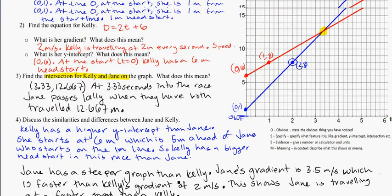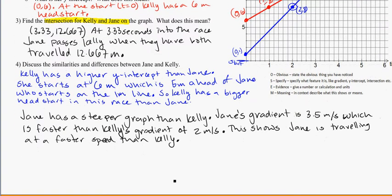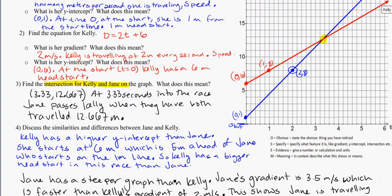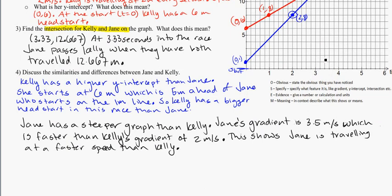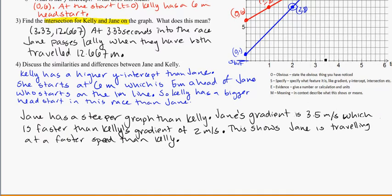So that could be differences here. One thing that I notice, as well, as an obvious feature, if we want to think about other things to talk about, would be that Kelly is ahead in the race until this point here. And then Kelly is behind, and Jane is ahead in the race. So that intersection is kind of an interesting point to talk about. And so we have a little bit of a similarity there as well.